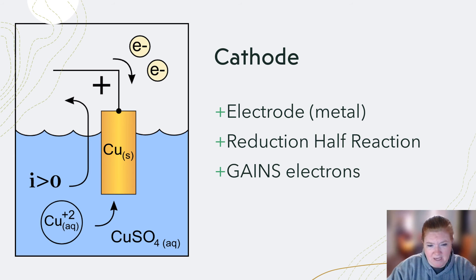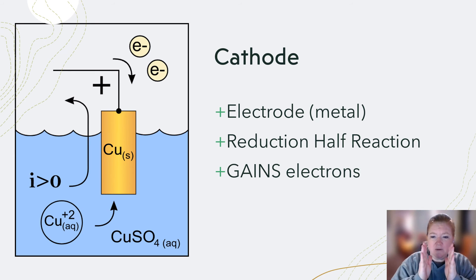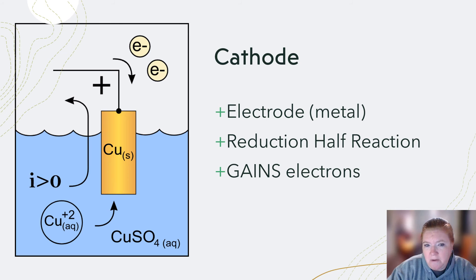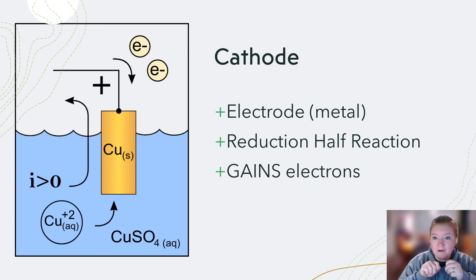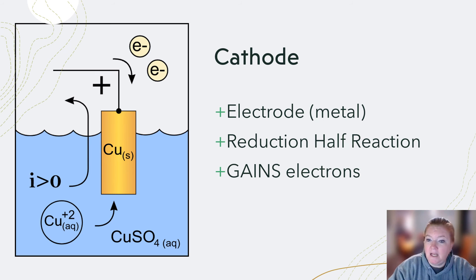Think about batteries: the anode is getting smaller and smaller while the cathode gets bigger and bigger — and batteries die. Why? Because they literally run out of anode. In a rechargeable battery, you force that reaction to go backward, making the anode piece grow again so you can use it again.